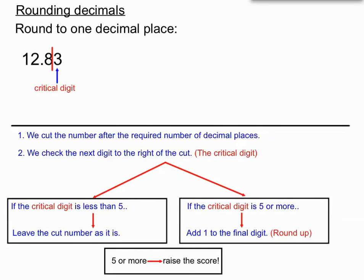Now we check the critical digit after the cut. In this case the critical digit is three, which is less than five, so we leave the cut number just as it is. My final answer: I'm not going to touch the 1, 2, or the 8 — 12.83 rounded to one decimal place is just 12.8. I haven't changed much at all except for chopping off the three at the end.